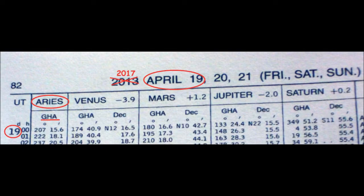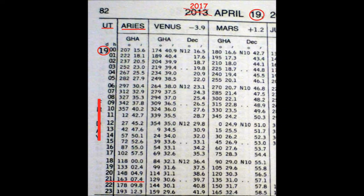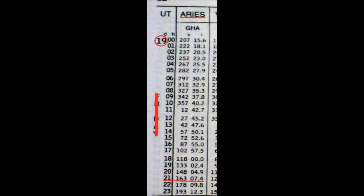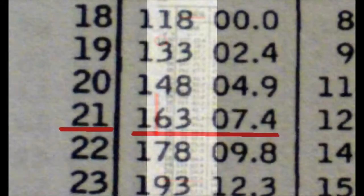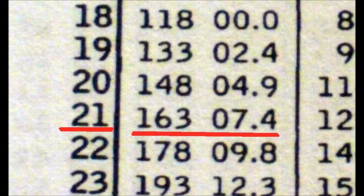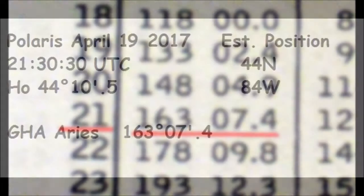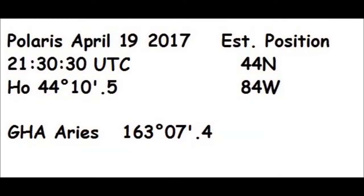Next, look up April 19th in the daily pages — you can ignore anything pertaining to 2013. Find the column for the GHA of Aries and move down to 2100 hours, where you find 163° 7.4 minutes. That is the GHA of Aries at 2100 hours even.